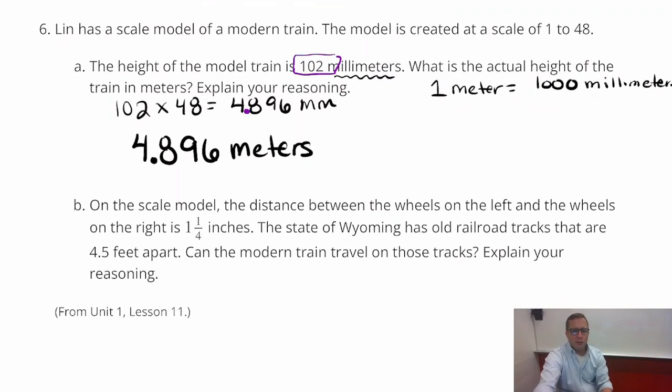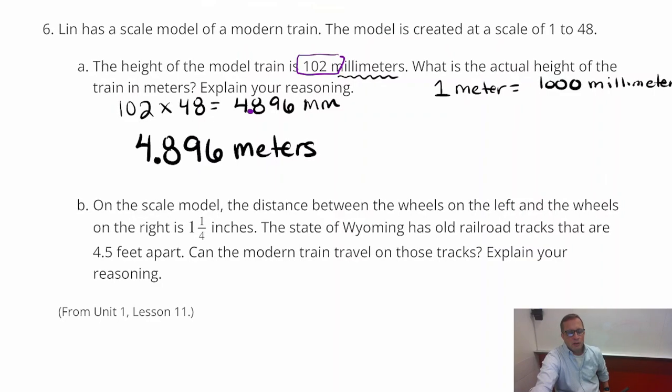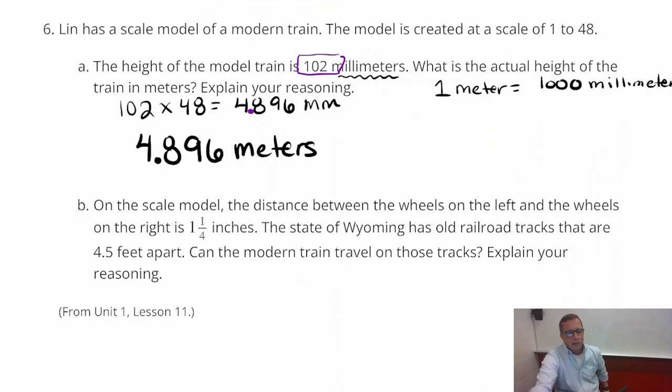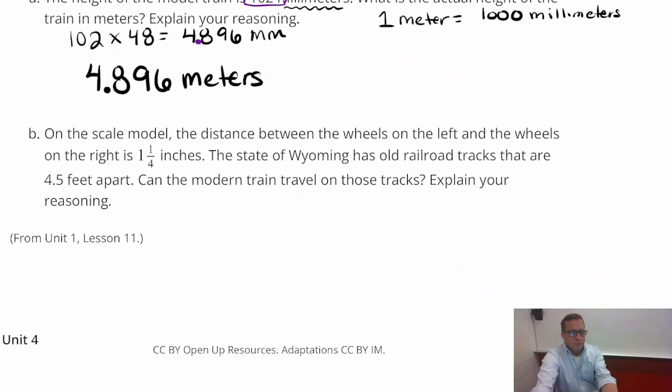I'm not going to round that. I mean, I guess we could round it to 4.9, but I'm just going to leave it. It's not a decimal that keeps going. So the actual train is 4.896 meters. And before you think like, well, that doesn't seem very tall, remember, a meter is a little bit longer than three feet. So yeah, this is almost five meters. So it's almost, you know, 15 feet. It's probably over 15 feet tall. And trains are tall. Trains are big.